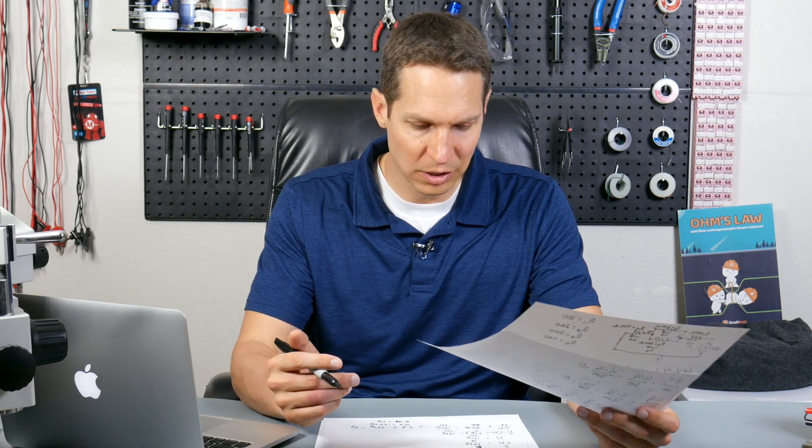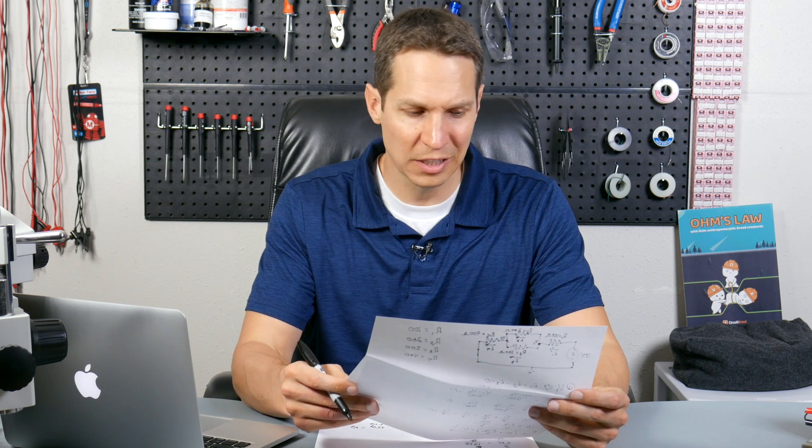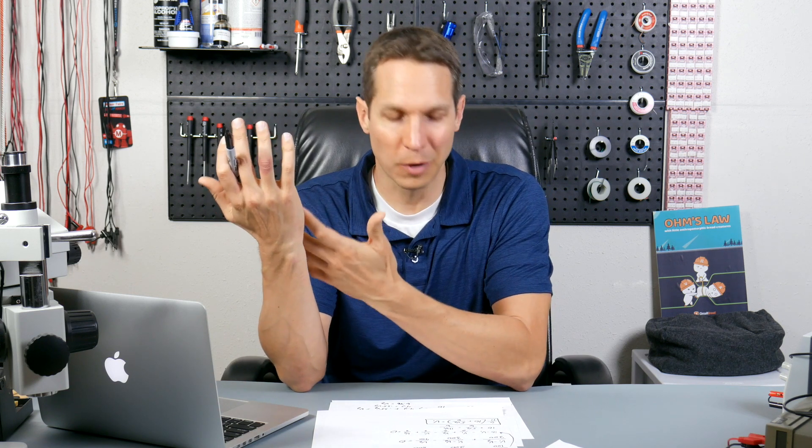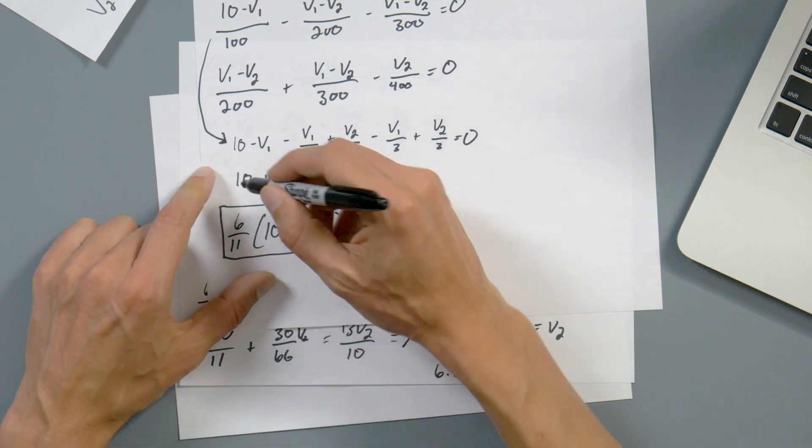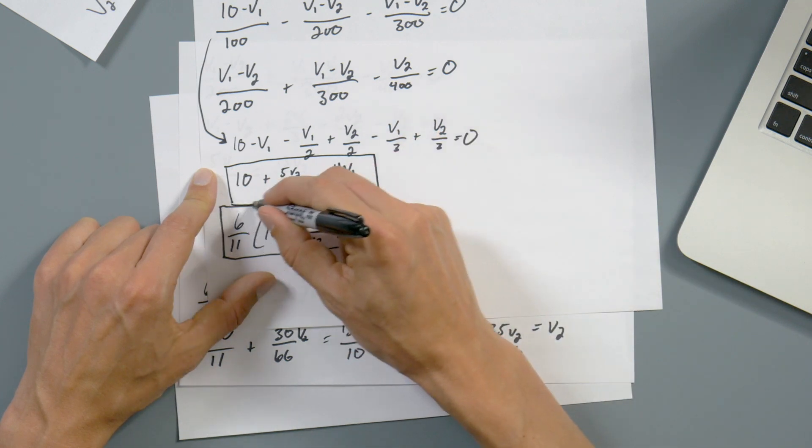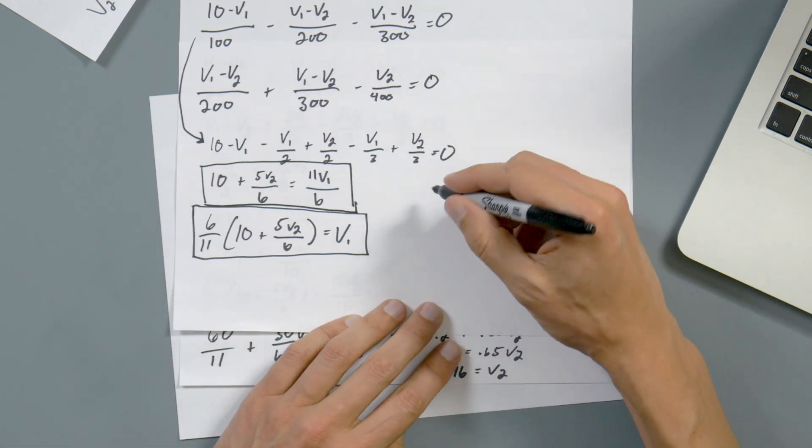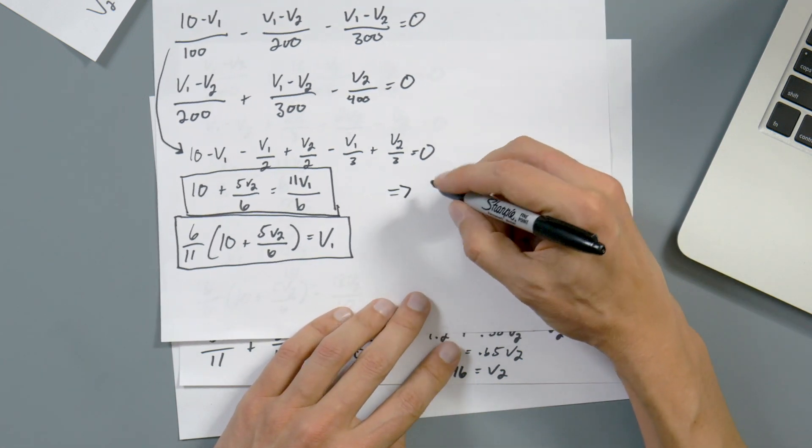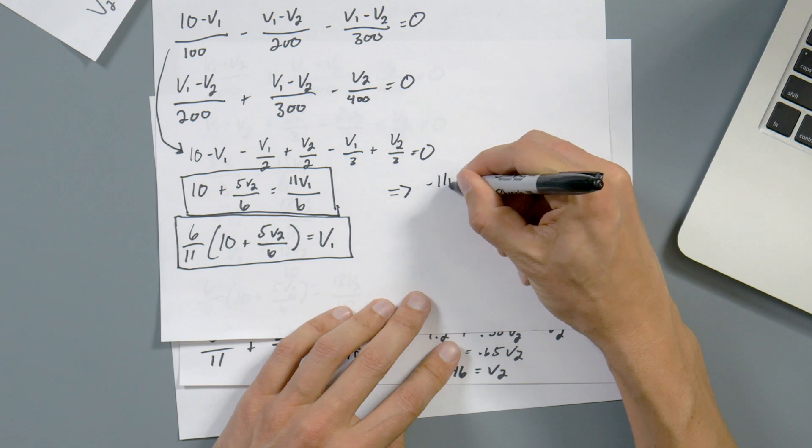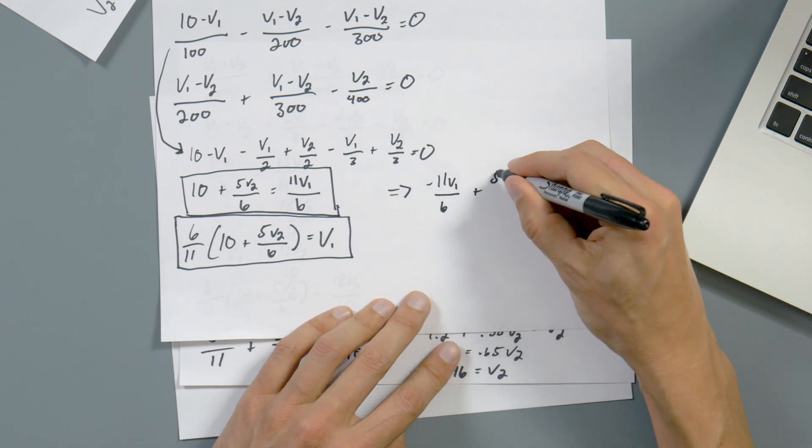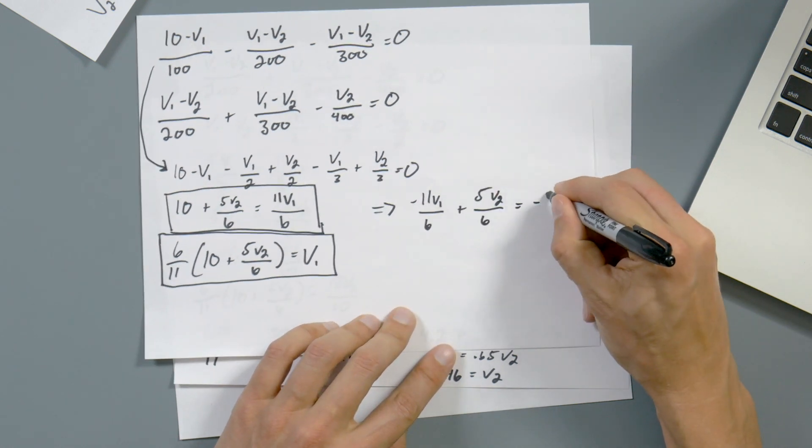So second method, the way you do it is you basically just have to match the V1 and the V2, and then the actual number that you have and put it into a matrix properly. So we can take that and move it around a little bit. For the matrix calculation, it makes sense to put this as negative 11 V1 over 6 plus 5 V2 over 6 equals negative 10.